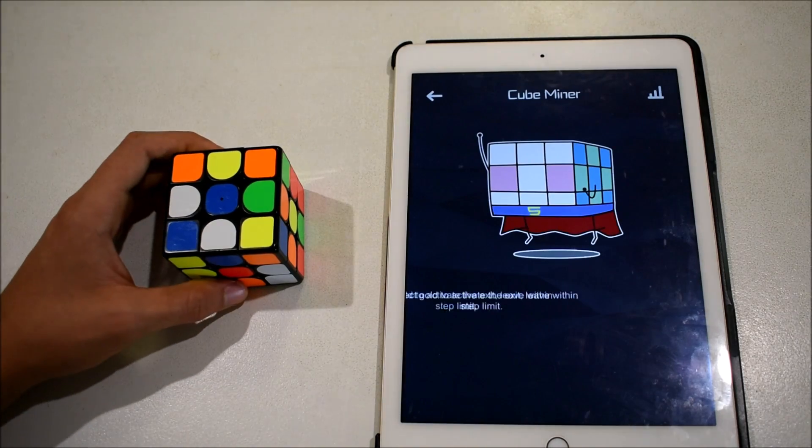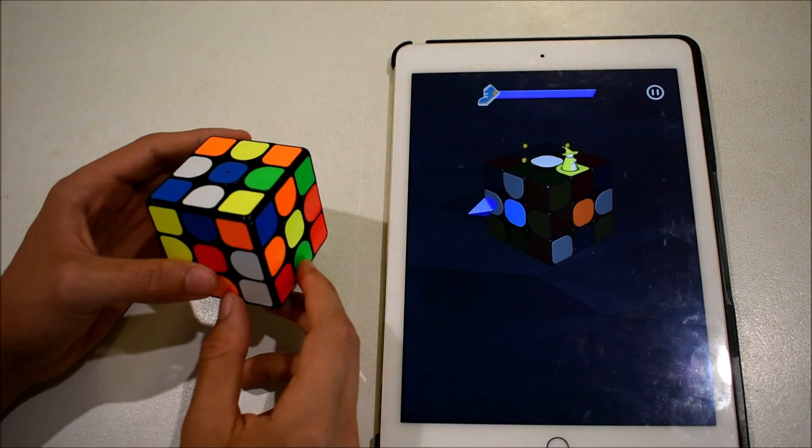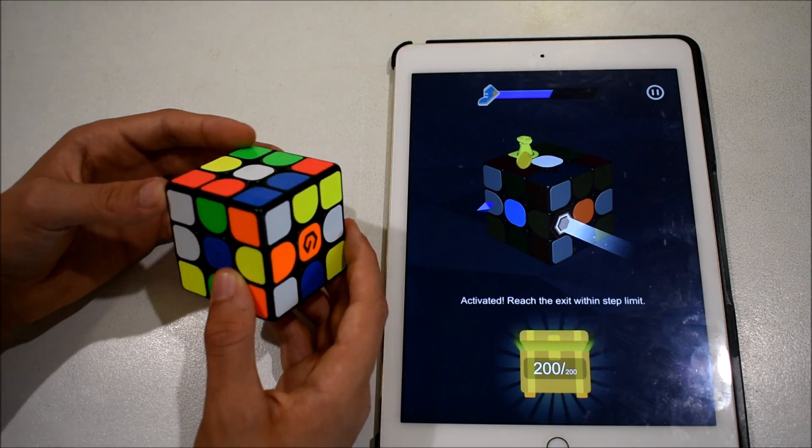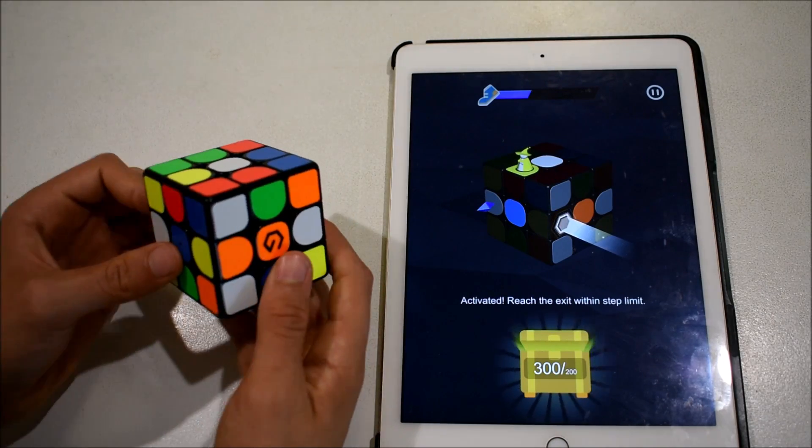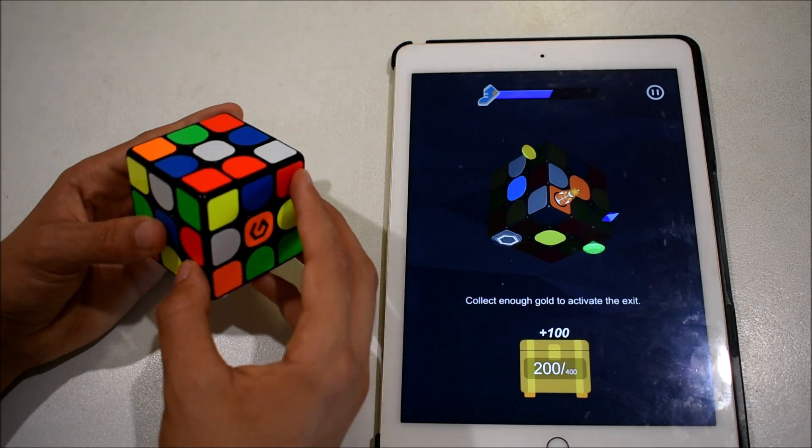Finally out of the mini games there is Cube Miner, my personal favourite. Here you have a character on a piece on the cube on the screen and you have to move that character around the cube on the screen using your physical cube, collecting coins and reaching the exit in the fewest moves possible. If you use too many moves to reach the exit, you will fail.